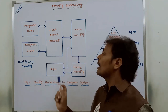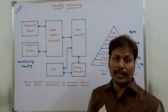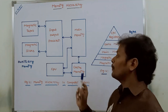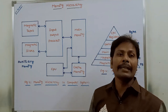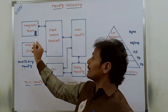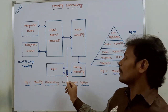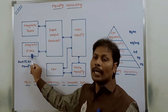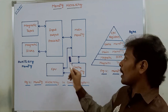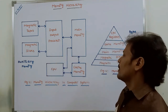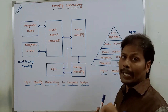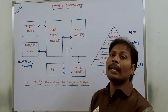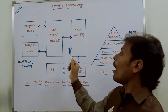Suppose the CPU wants to execute a particular program, but that program does not reside in the main memory — it resides in the auxiliary memory. To execute that program, whatever programs are stored in the auxiliary memory can be transferred to the main memory through the I/O processor. Similarly, if the CPU wants to use a particular program or data that is not available in the main memory, that data and program can be taken from the auxiliary memory through the I/O processor.